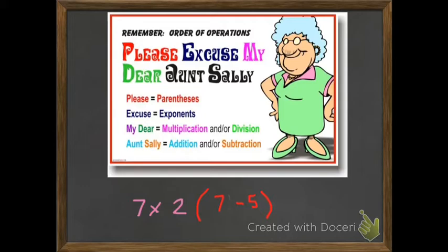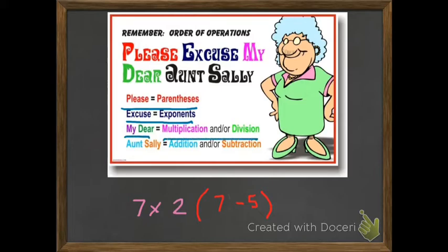I want you to remember: please excuse my dear Aunt Sally. 'Please' is parentheses. 'Excuse' would be your exponents — we won't really worry about that right now, that will be later, maybe next year or the following year. But what's really important this year is 'my dear,' which is multiplication and division, and then 'Aunt Sally,' which is addition and subtraction.